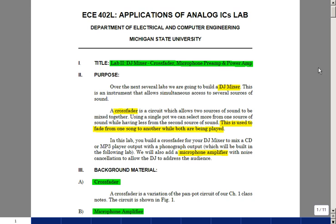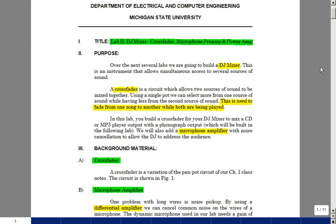One of the main components of a DJ Mixer is a circuit called a Crossfader. This allows two sources of sound to mix together. Using a single pot we can select more from one source of sound while having less from the second source of sound. We can use this to fade from one song to another while both are being played.